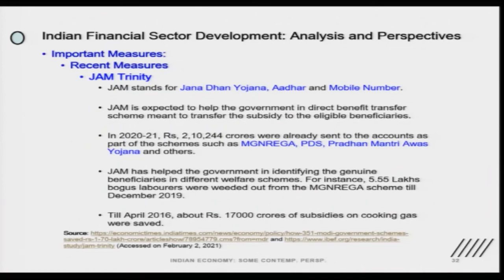For instance, 5.5 lakh bogus laborers were weeded out from the MGNREGA scheme till December 2019, though this also needs verification as to whether those workers who were weeded out had alternative livelihood options — if they did not, then at least some kind of benefit should have been given. Till April 2016, about 17,000 crores of subsidies on cooking gas were saved because they were not transferred based on this JAM Trinity. So the JAM Trinity is one of the important topics going forward, and it is also helping the financial inclusion process by facilitating direct benefit transfers.